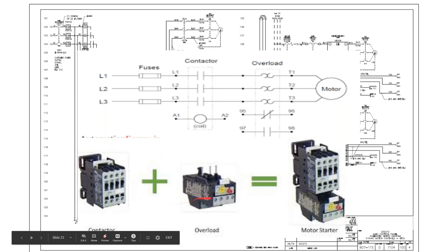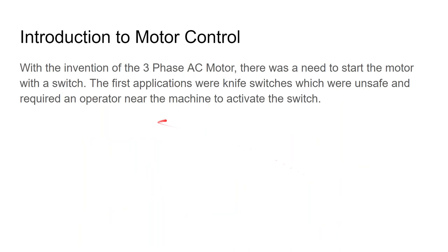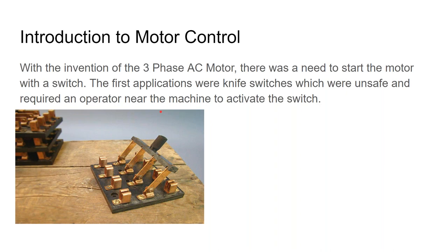To introduce motor control: when the three-phase AC motor was invented, engineers needed a way to start it. Early on they used knife switches, but these were very unsafe — there was a risk of arcing and an operator had to be nearby to activate the switch. These are the types of switches you'd see in any Frankenstein movie.